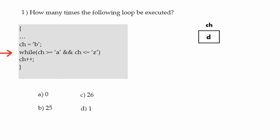From value 'b' to 'z' the loop will be executed, because the initial value of ch is 'b'. There are a total of 25 characters from 'b' to 'z', so we can directly say this loop will be executed 25 times. Our answer is 25.